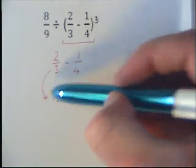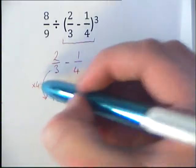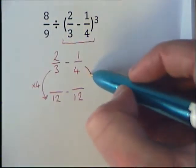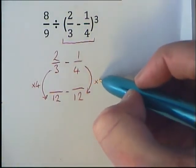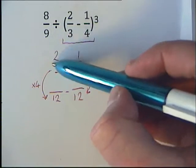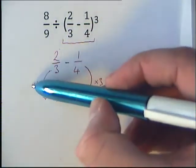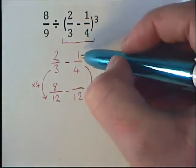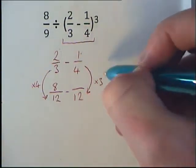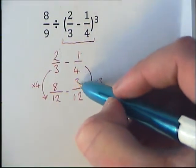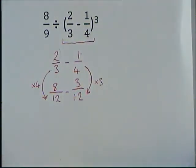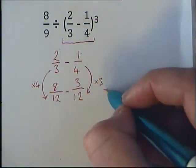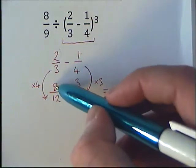What have we had to times 3 by to get to 12? We've had to times it by 4. What have we had to times 4 by to get to 12? We had to times it by 3. So then we need to do the same to our top numbers. 2 times 4 is 8, 1 times 3 is 3. So we can now work that out and take them away. 8 take away 3 is 5.